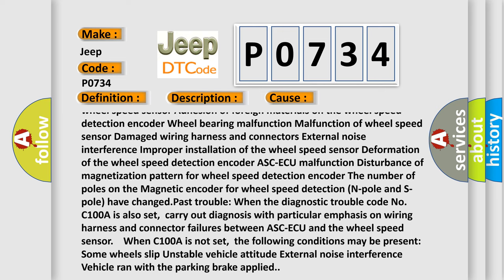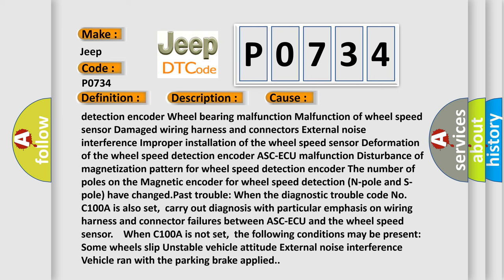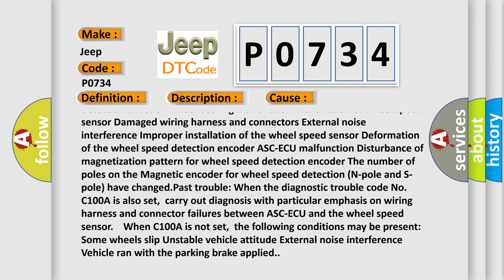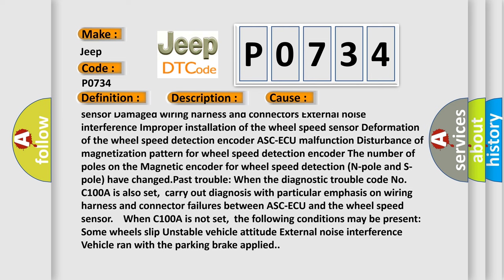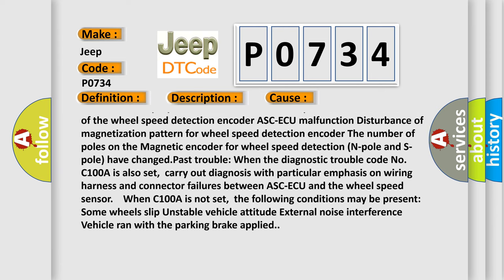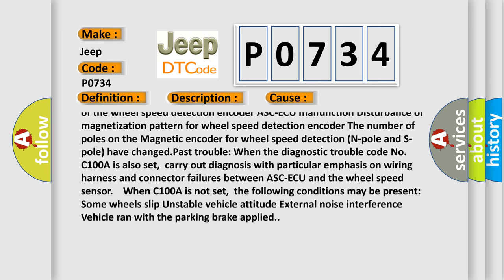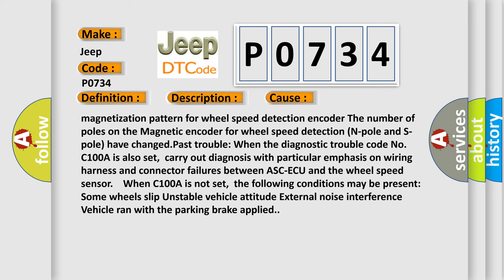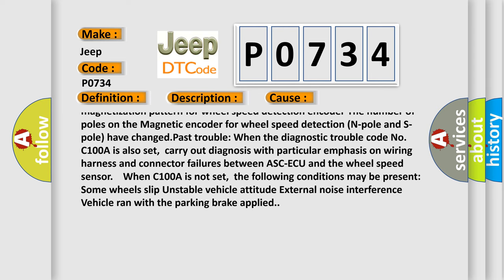Wheel bearing malfunction, Malfunction of wheel speed sensor, Damage to wiring harness and connectors, External noise interference, Improper installation of the wheel speed sensor, Deformation of the wheel speed detection encoder, ASC-ECU malfunction, Disturbance of magnetization pattern for wheel speed detection encoder. The number of poles on the magnetic encoder (N pole and S pole) have changed. Past trouble: When the diagnostic trouble code...